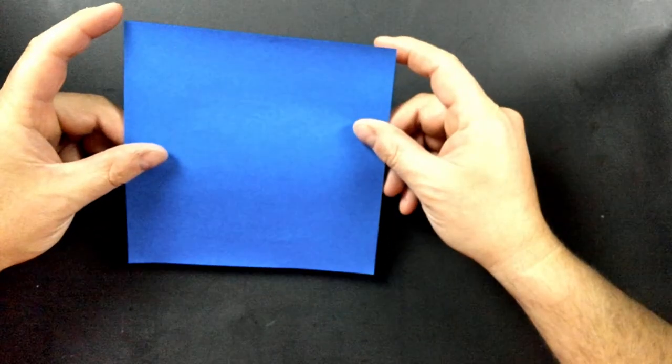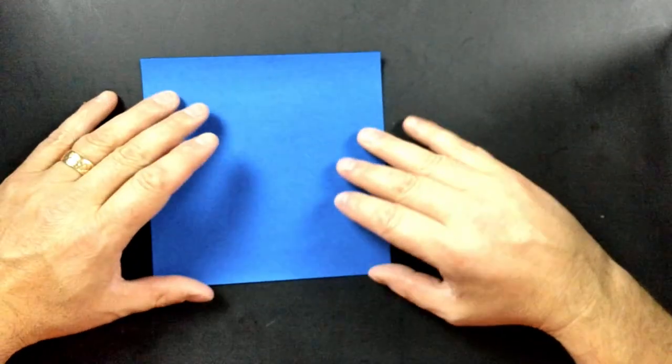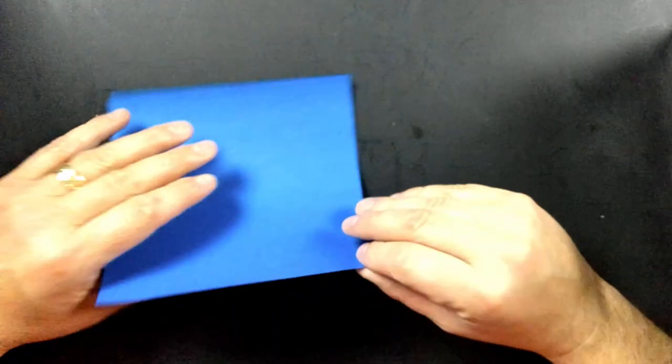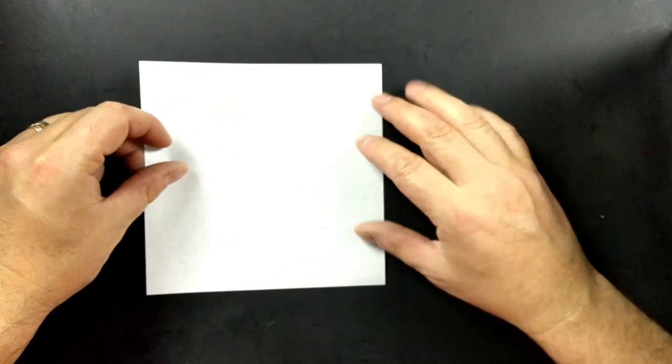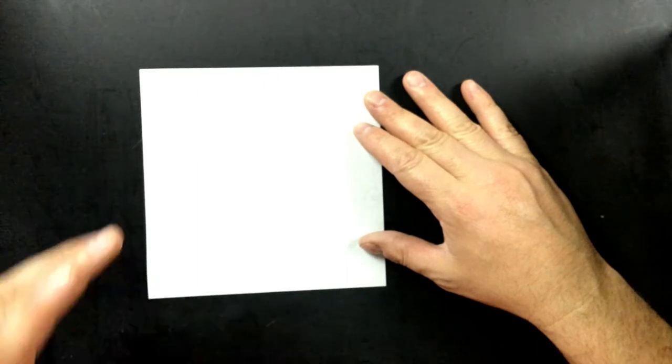It's got white on the back, color on the front, but it can be copier paper, printer paper, something lightweight that's going to be easy to fold. We're going to turn it over, or if you have origami paper, where the blue is facing the table, the white's up.